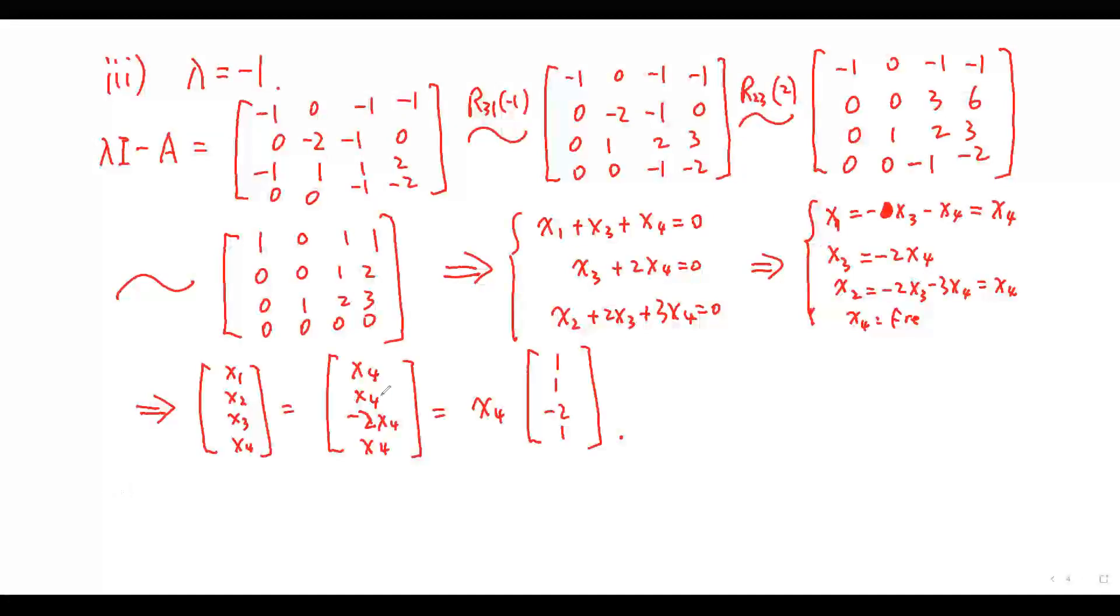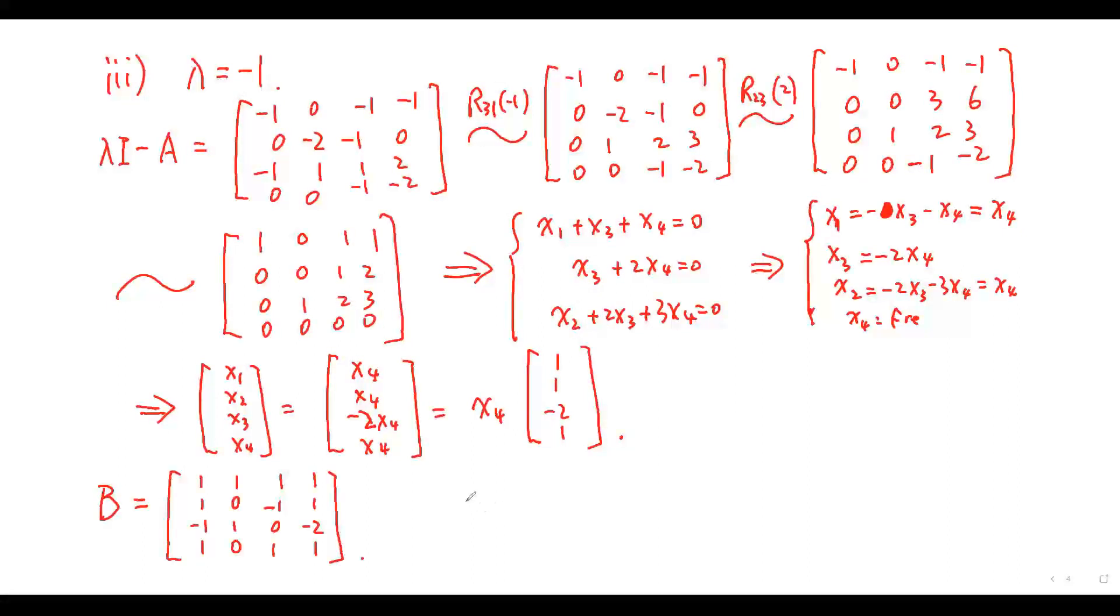Now, from those eigenvectors, we get the matrix B equals. The Jordan form can be obtained by B inverse A B equals.